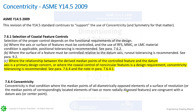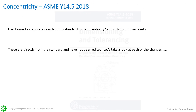The reason I threw in this 2009 reference — and we are talking about the 2018 — is I wanted to show you that ASME and ANSI, in all of the previous standards, recognized concentricity as a coaxial feature control. And what you'll see here for 2018 is very interesting. I did a search in the 2018 standard and clipped every one of the changes. I only found five results. I've put them all in here and we'll go through them one slide at a time. These are directly from the standard; I didn't edit them in any way. So if you don't have a copy of the 2018 standard, everything you need to know about concentricity per the 2018 standard will be coming up.